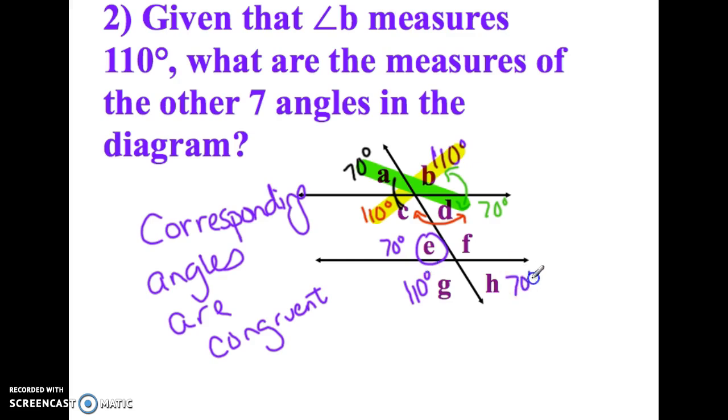The angle that corresponds to C is G. That has to be 110 degrees. D corresponds to H. That's 70 degrees. And B corresponds to F. That's 110 degrees.